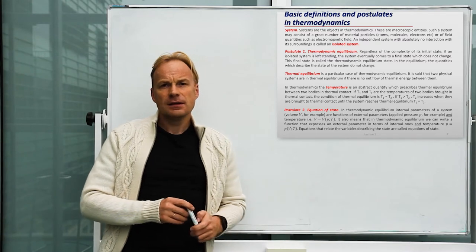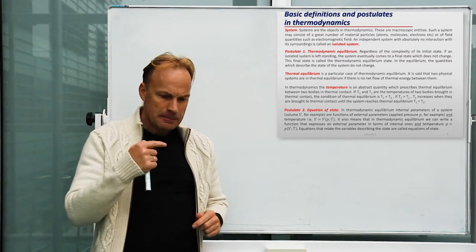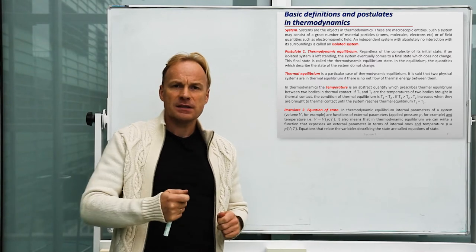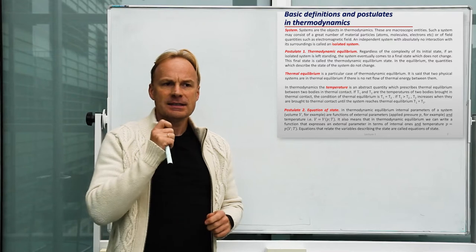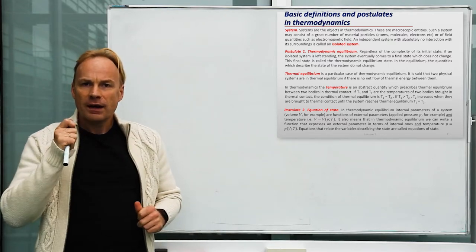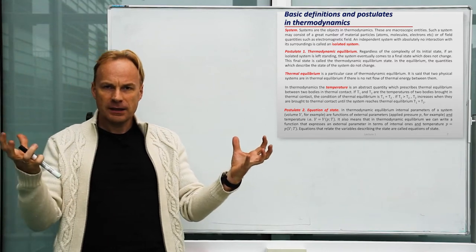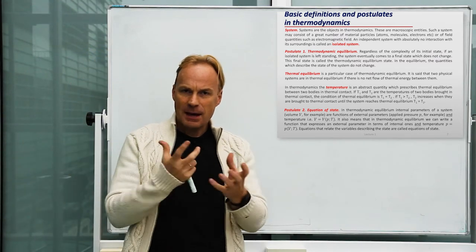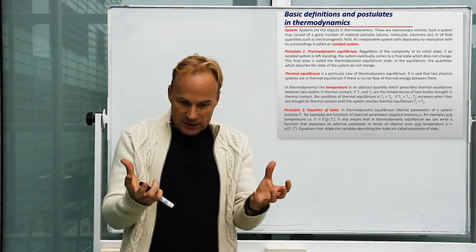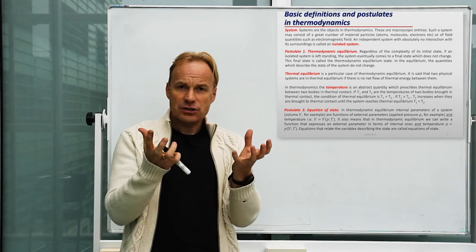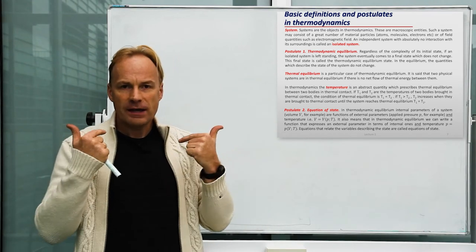Temperature is the most counterintuitive concept in thermodynamics. Despite your feeling that temperature can be measured by a thermometer, temperature is something very abstract in thermodynamics. It is the quantity that equilibrates when thermal equilibrium is achieved. You have a hot body and a cold body; you bring them together, something happens in the system, and when they achieve thermal equilibrium, we say that they have reached the situation of equal temperatures.